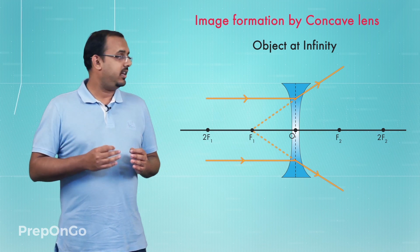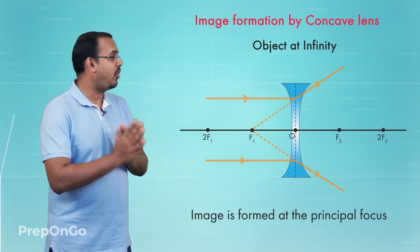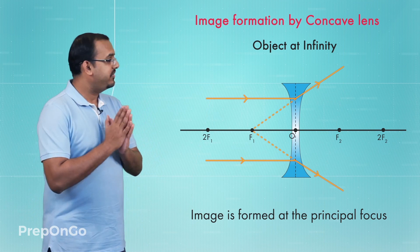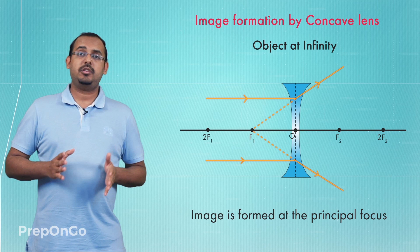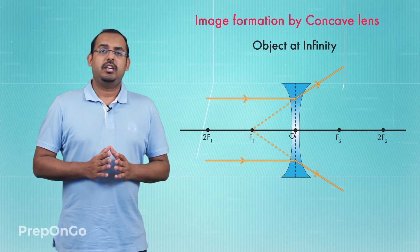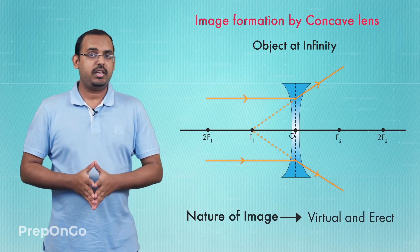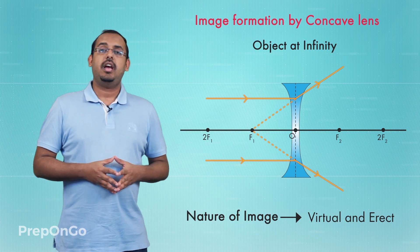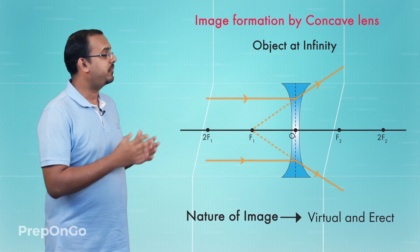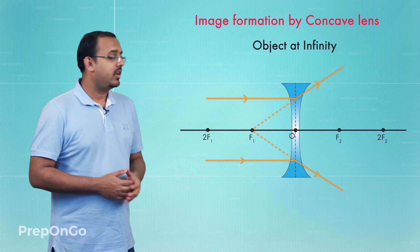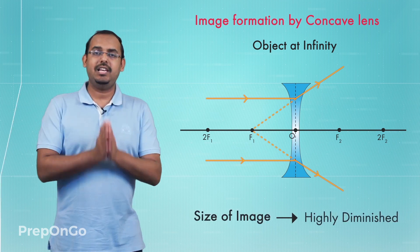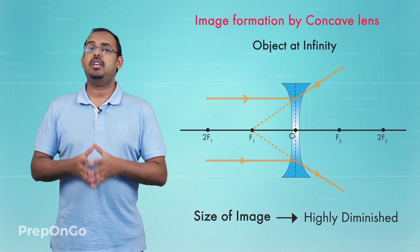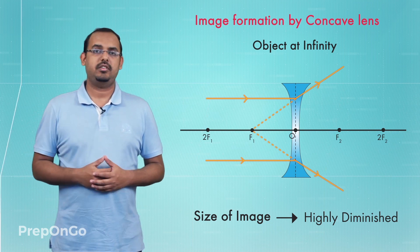This means that an image of the point on the object is formed at the focus of the concave lens. If we continue this for all points on the object, an image is formed at the principal focus of the concave lens. The image formed is a virtual and erect image, and it is highly diminished in size — much smaller when compared to the original size of the object.